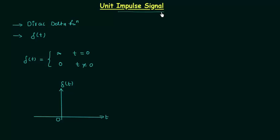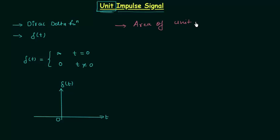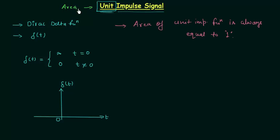Now, why do we call it the unit impulse signal? What is the significance of 'unit' in unit impulse signal? We define the unit impulse signal as a signal or function with unit area. The area of the unit impulse function is always equal to one. So 'unit' in unit impulse signal stands for unit area.